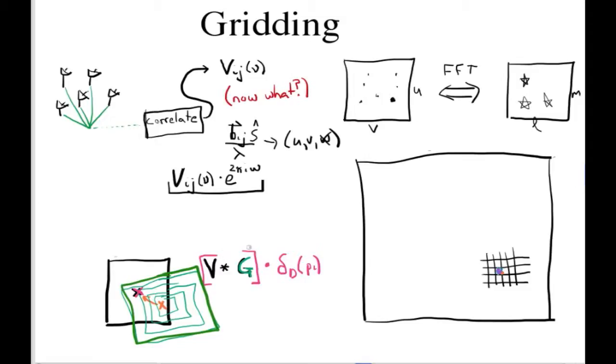And as we know, convolving your true visibilities by some kernel is the same thing as multiplying your true sky by the Fourier transform of that, just by the convolution theorem.